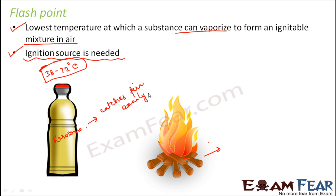Similarly, if you look at the flashpoint of diesel, it has a flashpoint of around 52 to 96 degrees Celsius. That means anywhere between those temperatures — maybe any temperature between 38 to 72 degrees Celsius — kerosene can catch fire if there is an ignition source present. On its own it will not catch fire at these temperatures; it will catch fire only if there is an ignition source present.